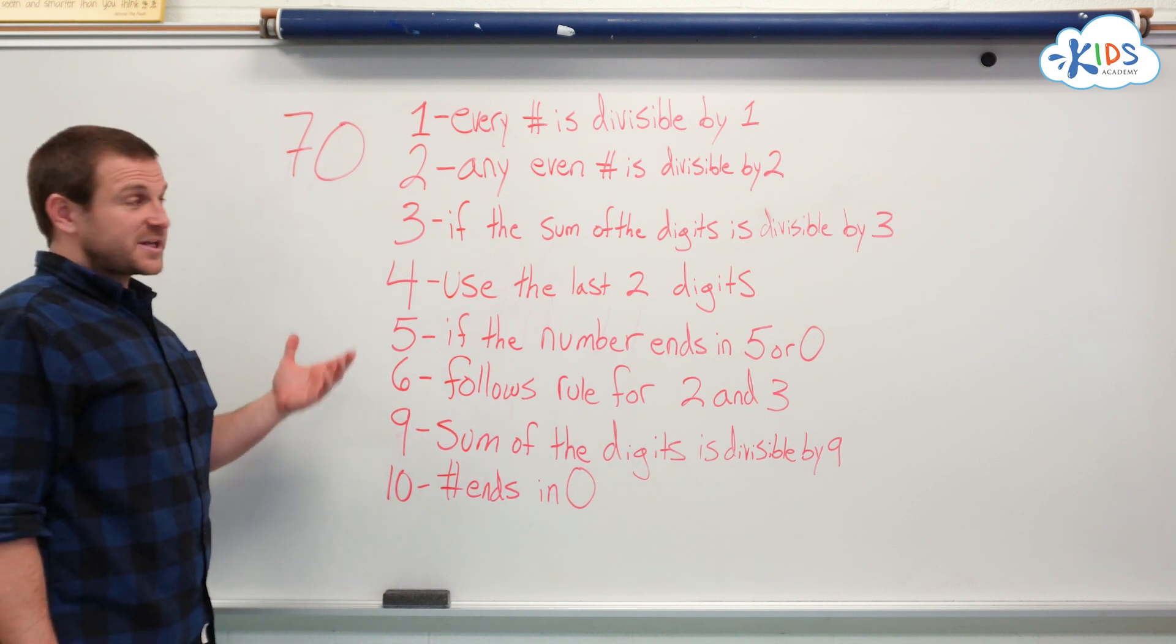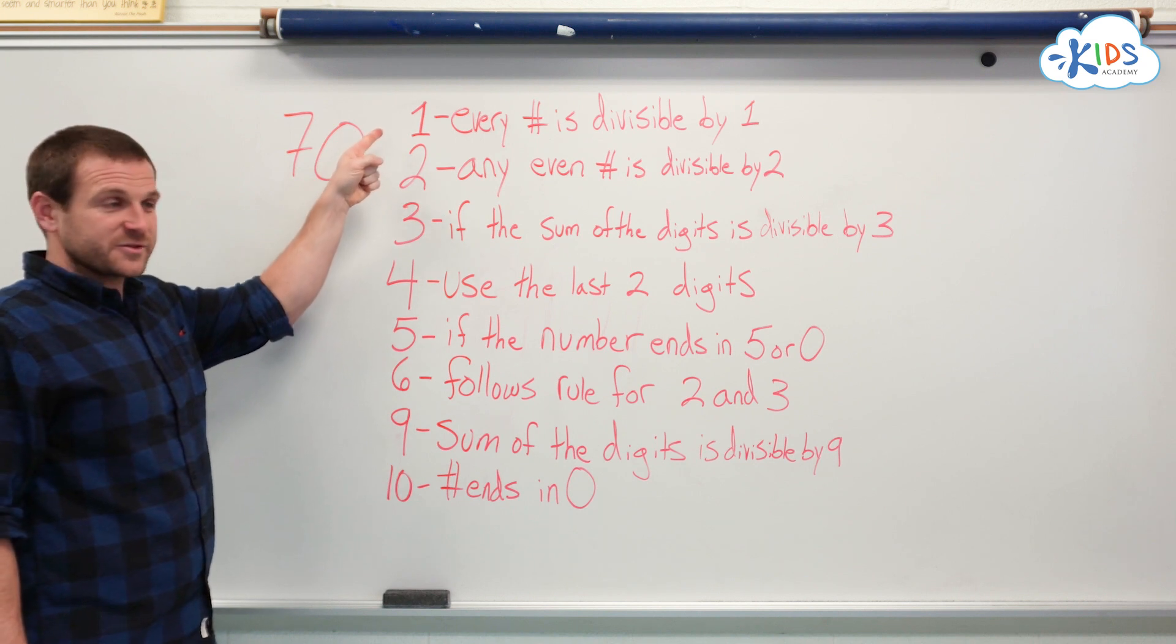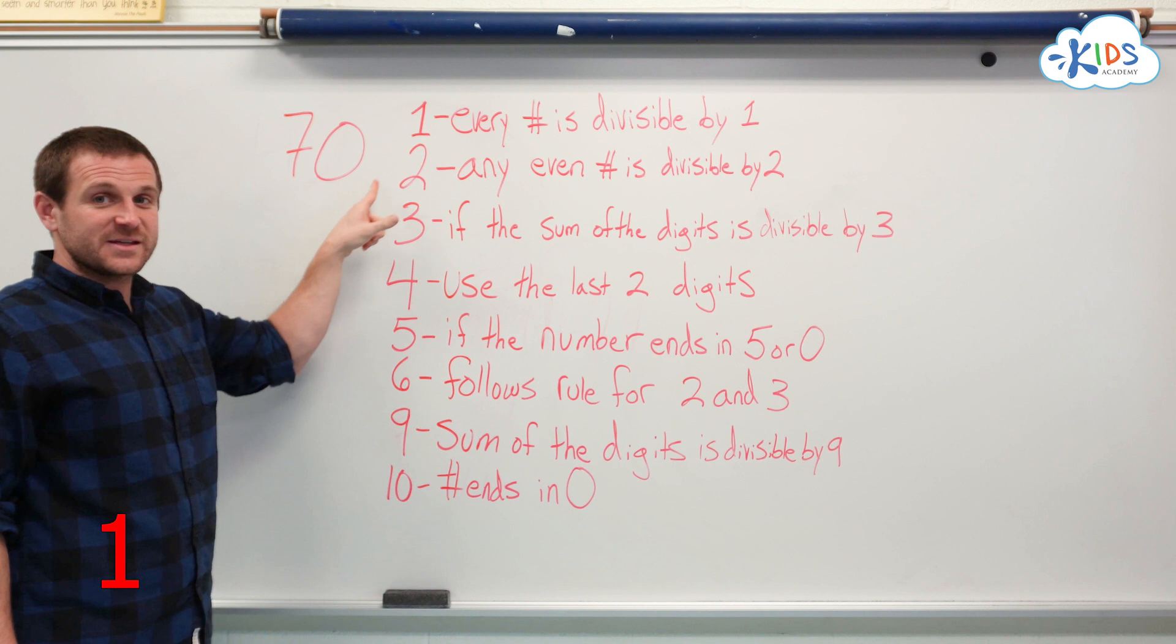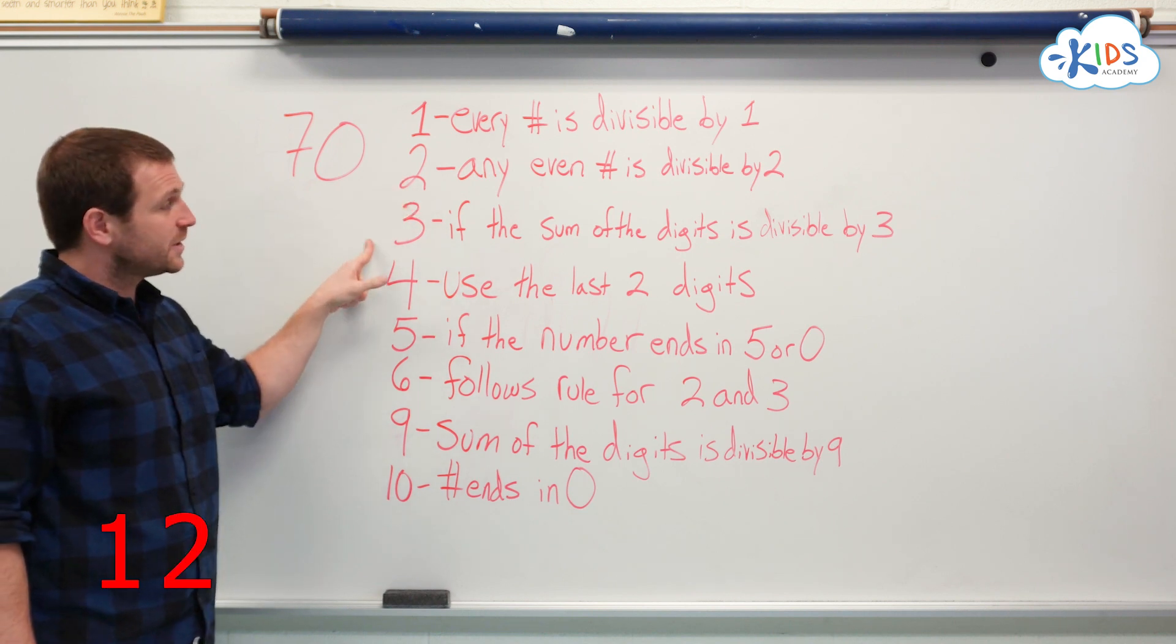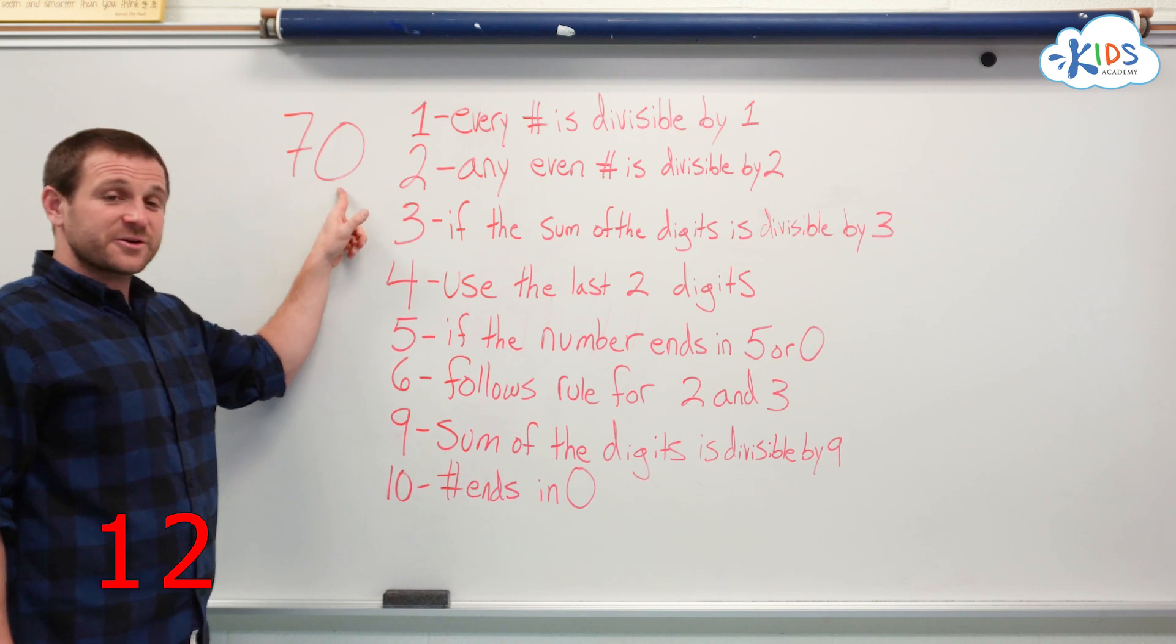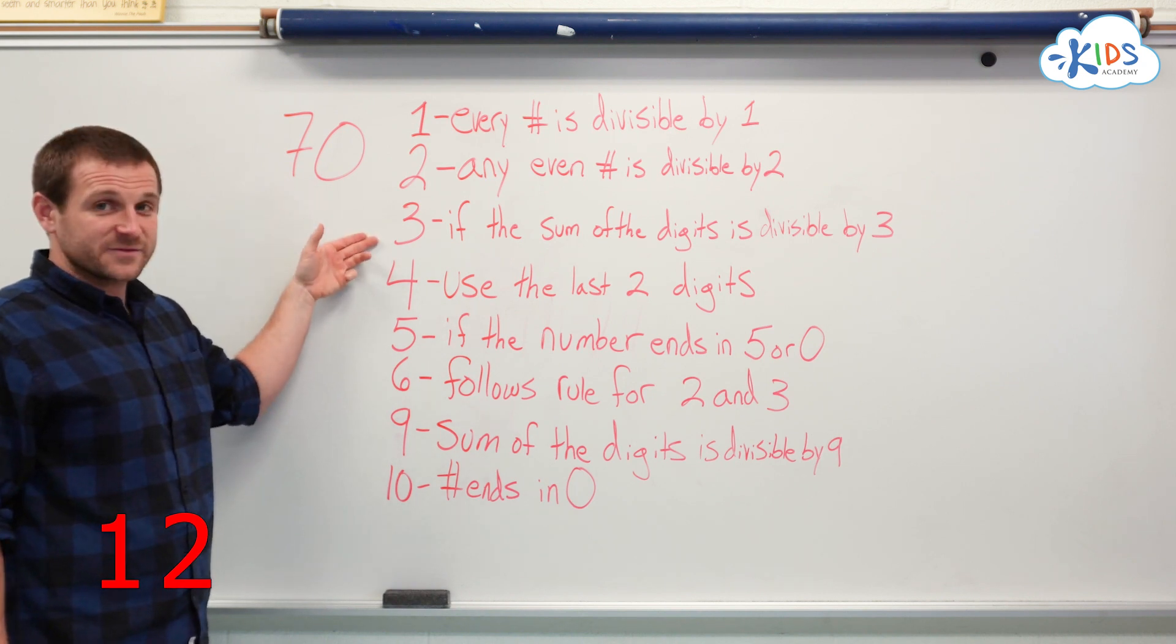Let's run through another example with the number 70. 1. Every number is divisible by 1. Is it even? Yes, 70 is even, so it's divisible by 2. Is the sum of the digits divisible by 3? 7 plus 0 is 7. 7 is not divisible by 3. Therefore, it is not divisible by 3.